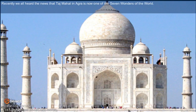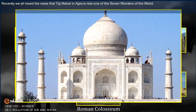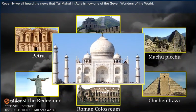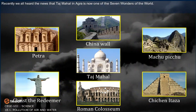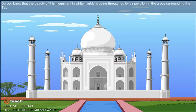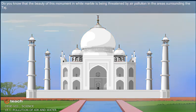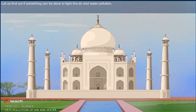Recently, we all heard the news that Taj Mahal in Agra is now one of the seven wonders of the world. But do you know that the beauty of this monument in white marble is being threatened by air pollution in the area surrounding the Taj? Let us find out if something can be done to fight the air and water pollution.